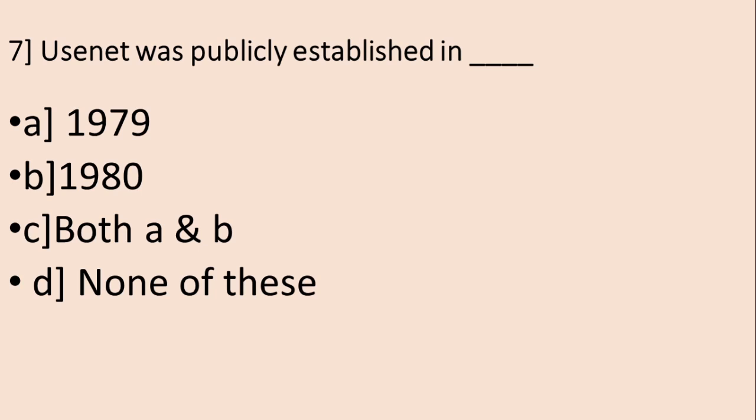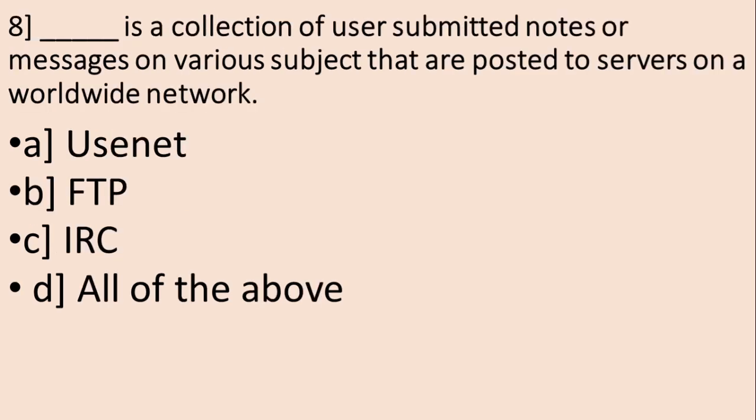Now move on to next question, that is question number seven. Usenet was publicly established in A, 1979, B, 1980, C, Both A and B, D, None of these. So the correct answer is B, 1980. Next question: blank is a collection of user submitted notes or messages on various subjects that are posted to servers on a worldwide network. A is Usenet, B is FTP, C is IRC, and D is All of the above. And the correct answer is A, Usenet.